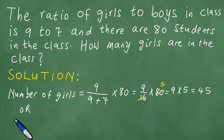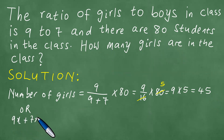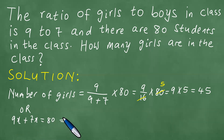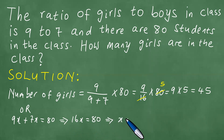Alternatively, because there are 80 students in the class, we can say that 9x plus 7x equals 80, and this means 16x equals 80. Dividing both left and right by 16 means x equals 5.